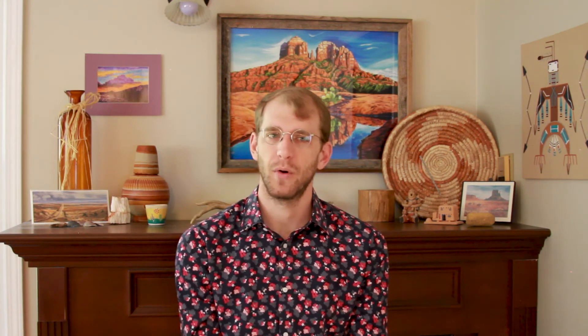The only asset we consider to be risk-free in the US market is a US Treasury bond — we are essentially making a loan to the US government. What we need to figure out is how to estimate the relationship between risk and the risk premium: how much extra return do investors demand for bearing extra risk? To quantify that relationship, let's start with the simplest kind — a linear relationship, or a line.